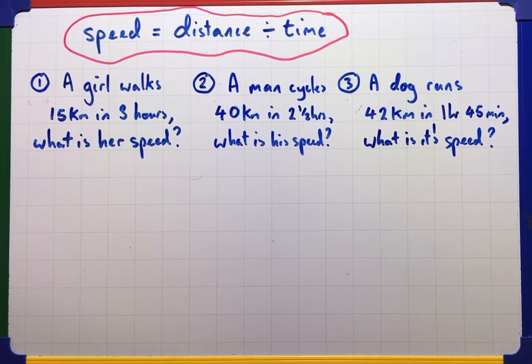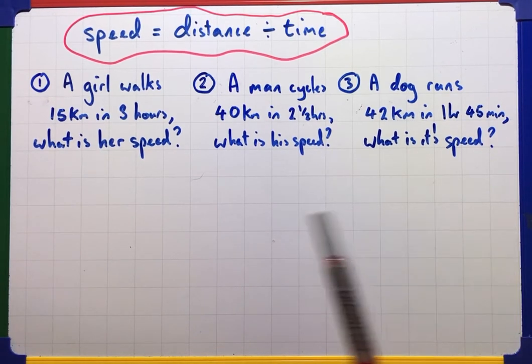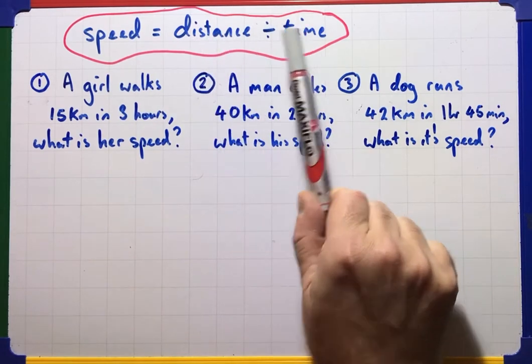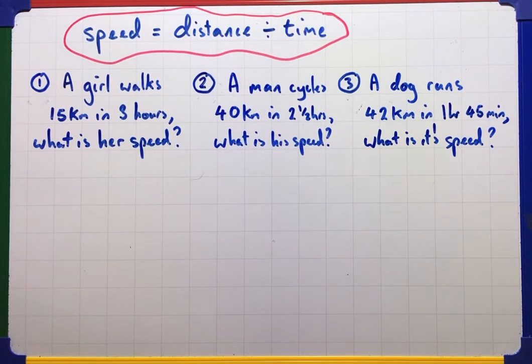In this video, we're going to have a look at speed, how we calculate speed from distance and time. First of all, our formula is that speed is distance divided by time. The units generally give you an idea of this because a unit of speed could be something like miles per hour, or kilometres per hour, metres per second. So it's distance divided by time. Let's do a few examples.